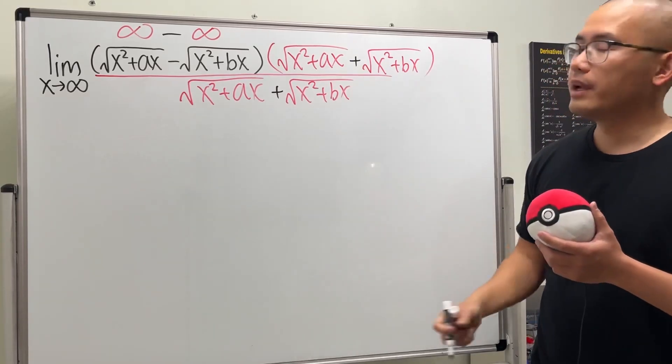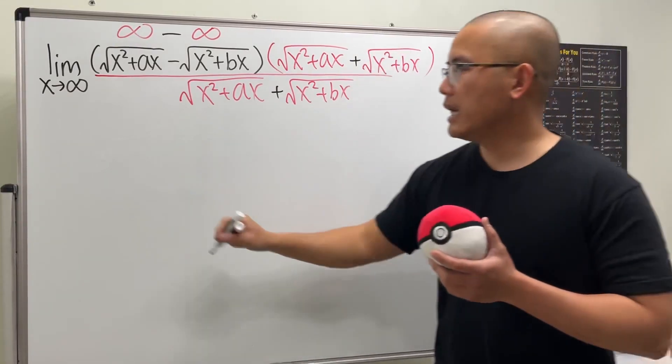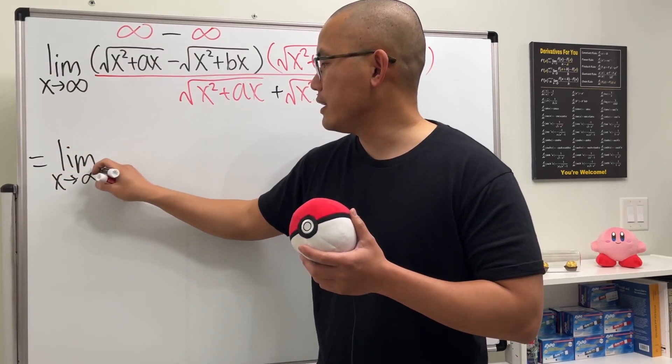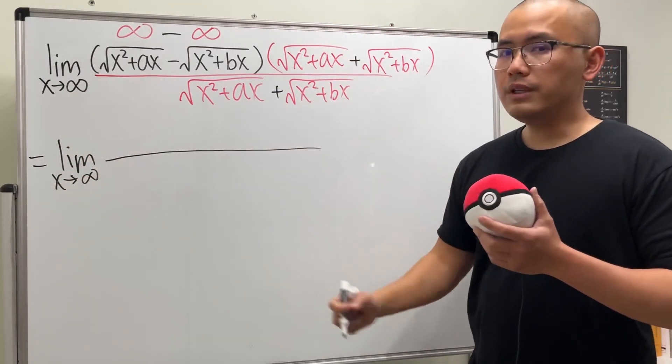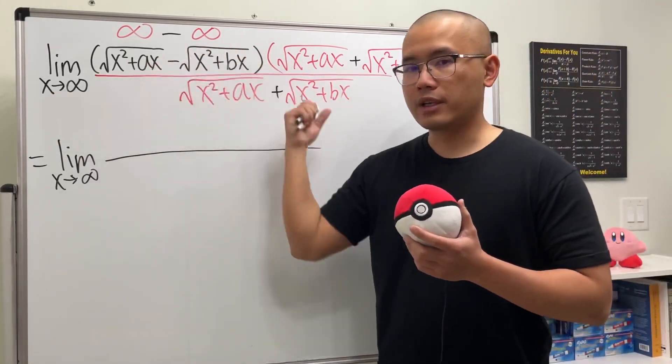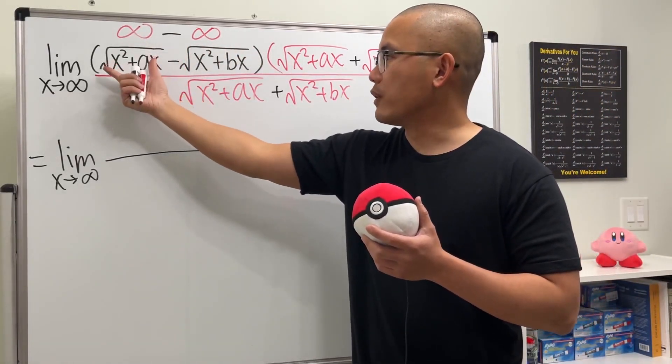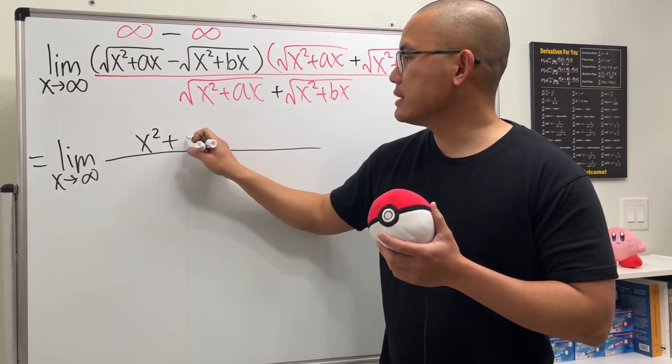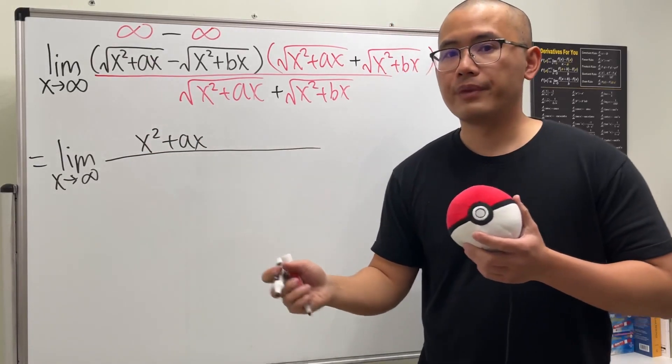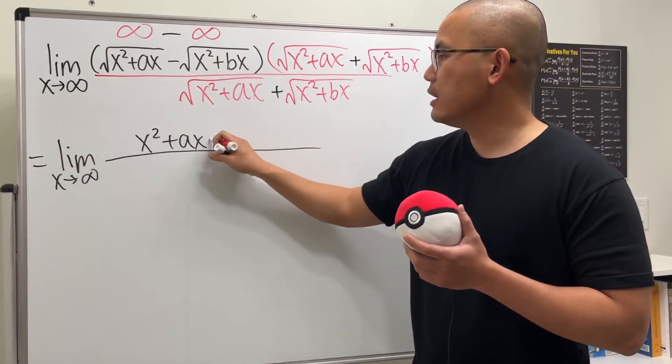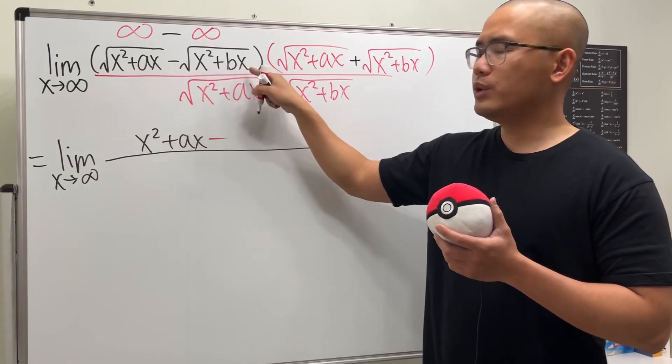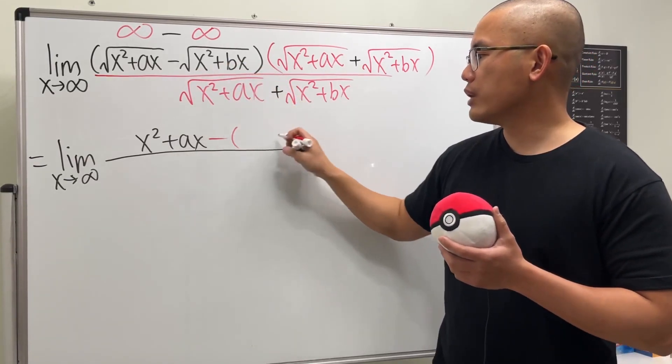Cool, and let's go ahead and multiply out the top and let's still write down the limit as x approaching infinity. For the top, when we are multiplying the conjugate we can just square the first term which we will just get x squared plus ax—that's the first term—and we will have to minus square the second. And in that case, we have two terms inside, so let's go ahead and put down the parentheses.